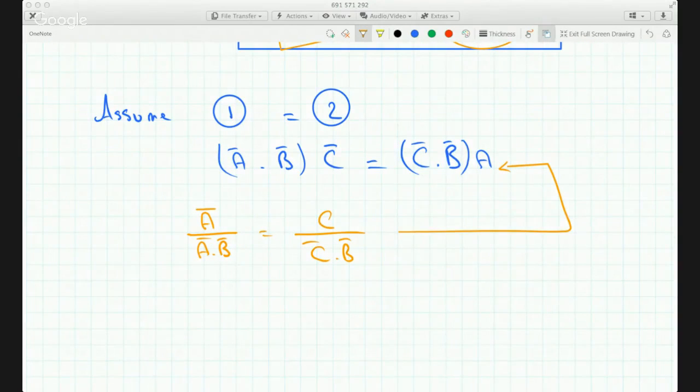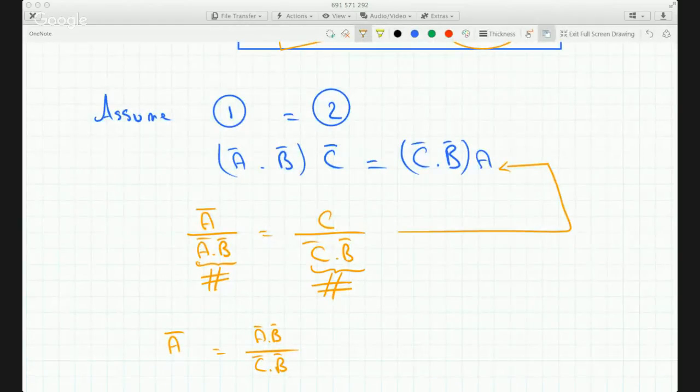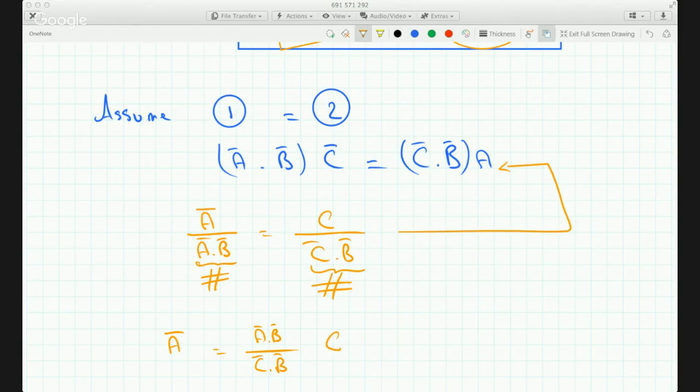So, what does this mean? This means we know that this is a number, and we know that this is a different number. So, take this number over there, and A becomes some number, A dot B, over some number, C dot B, which are not necessarily the same, by the way, because vectors A and C are not necessarily equal, times vector C.